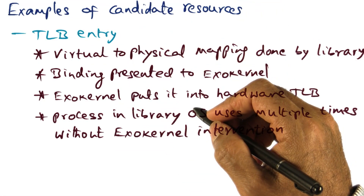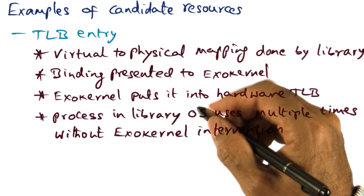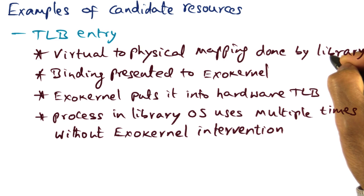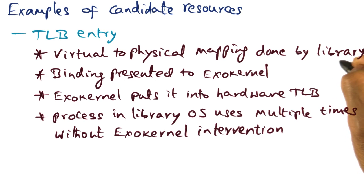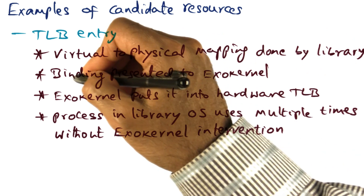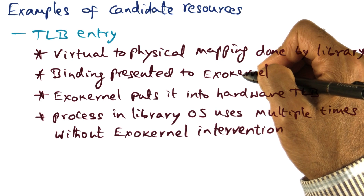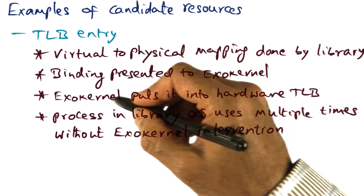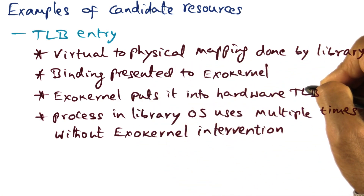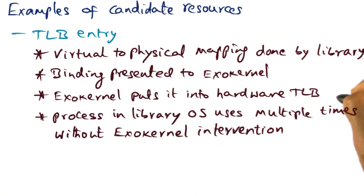Here is an example of a candidate resource: a TLB entry. A TLB entry is going to establish a mapping between a virtual page to a physical page. That mapping of the virtual page to the physical page is done by the library. Once that mapping has been done by the library, it presents the mapping to the exo-kernel along with the capability or the key — the encrypted key that it has for a particular TLB entry. Exo-kernel validates it and puts this mapping into the specific TLB entry of the hardware TLB.